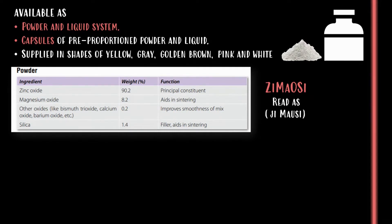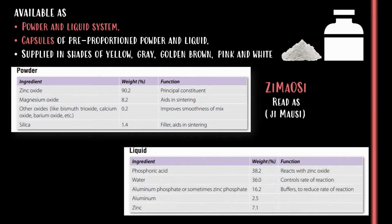O refers to other oxides and SI refers to silica. Zinc oxide acts as the principal constituent; magnesium oxide aids in sintering; other oxides like bismuth trioxide, calcium oxide, and barium oxide improve smoothness of mix; and silica acts as filler and aids in sintering.